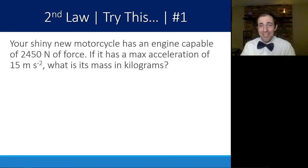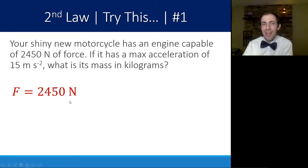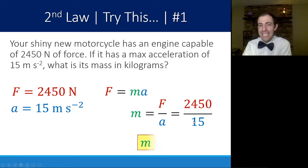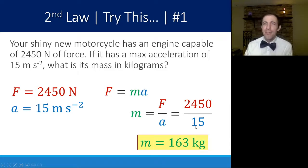The easiest way to see this in action is just to try it, to give an example of one. So say you have a motorcycle, shiny new motorcycle with an engine that's capable of 2450 Newtons of force. If it has a max acceleration of 15 meters per second, what is its mass in kilograms? Here I have F, I have a. I'm going to use my F equals ma relationship and solve for m, the mass. I do that by just dividing a on both sides. So I end up with m is equal to F divided by a. 2450 divided by 15 gives me a mass of about 163 kilograms. So just using this equation is one of the easiest things that we're going to do all year in this class. Just identifying what you need and what you have to solve for the unknown.